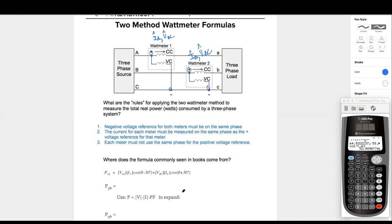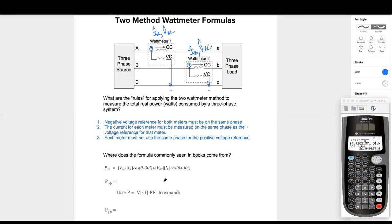Now, this formula that is commonly seen in books, where does it come from? So what we want to do is we want to first recognize that this is just really what? P equals V times I times power factor, right? In watts for wattmeter one and for wattmeter two, right?